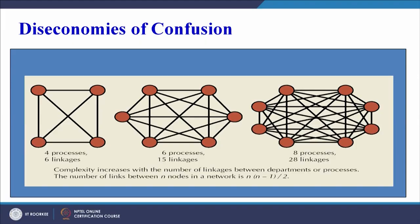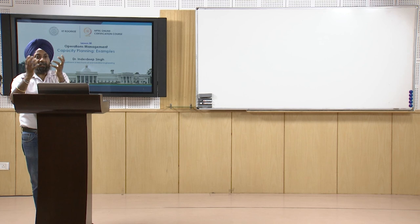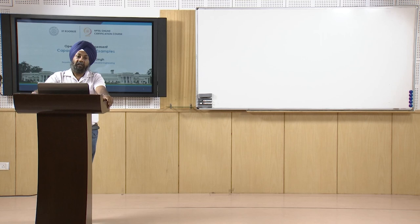For example, with four processes we have six linkages; with six processes, fifteen linkages; with eight processes, twenty-eight linkages. The number of links between n nodes in a network is n(n-1)/2. This is the diseconomy of confusion - managing a large variety of processes, products, and skilled manpower becomes difficult, and therefore we cannot achieve the target of minimizing average cost per unit beyond a particular operating level.